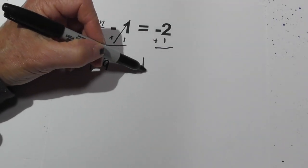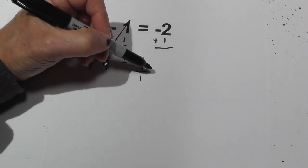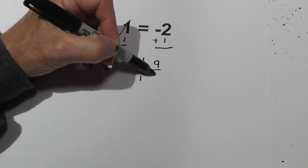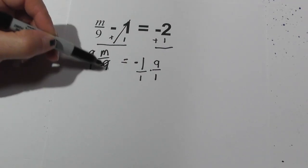What I do on one side I'm going to do on the other. I'm going to write negative 1 over 1 because it's the same thing, and then I'm going to do 9 over 1. The 9s cancel.